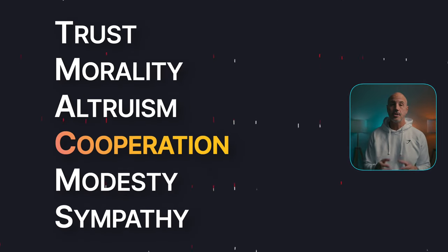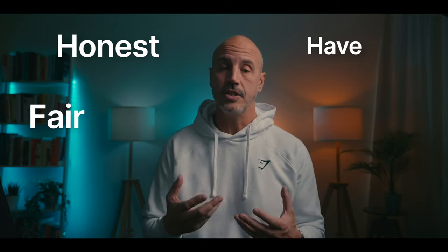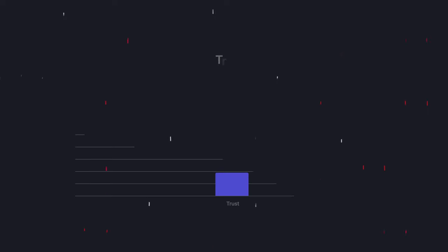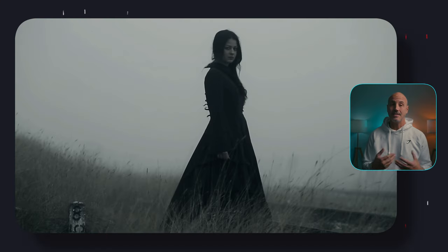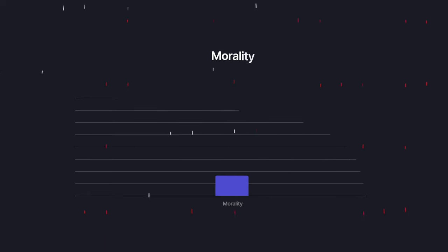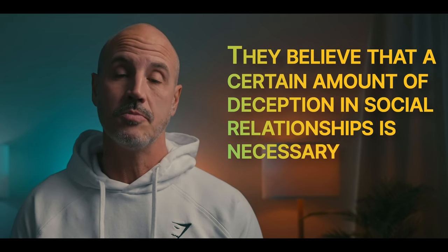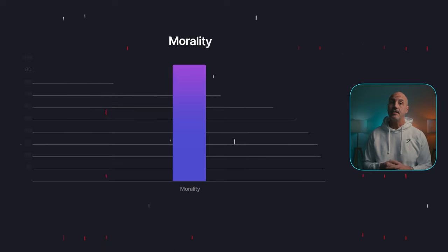A person with high trust assumes that most people are fair, honest, and have good intentions. Persons low in trust see other people as selfish, devious and dangerous. People who are high in morality do not use manipulation when dealing with other people — that is why they are candid, frank and sincere. When a person is low in morality, they believe that a certain amount of deception in social relationships is necessary. People find it easy to relate to those with high morality.